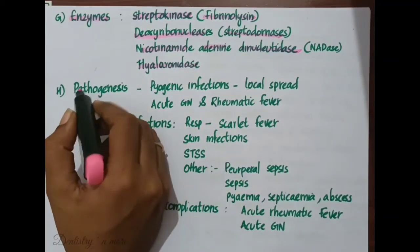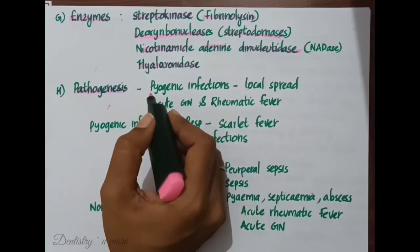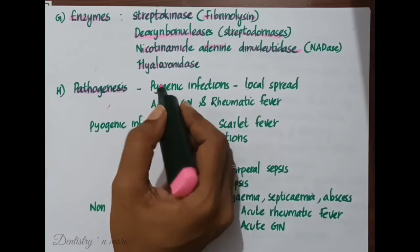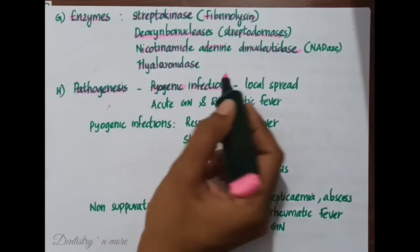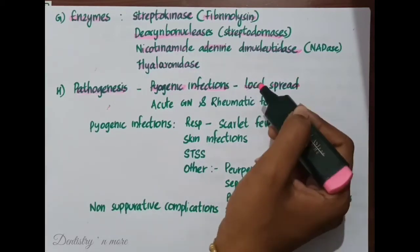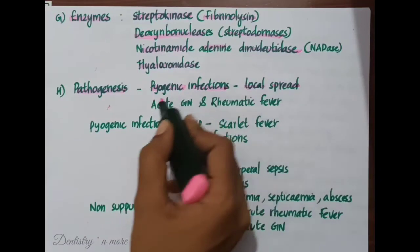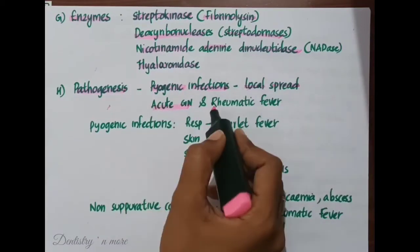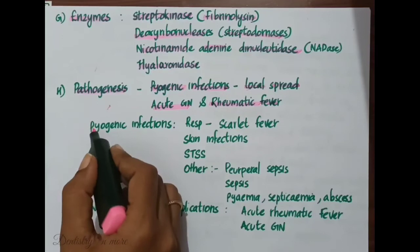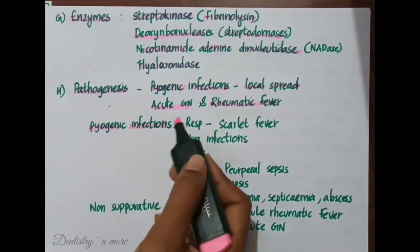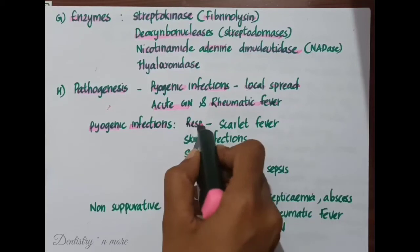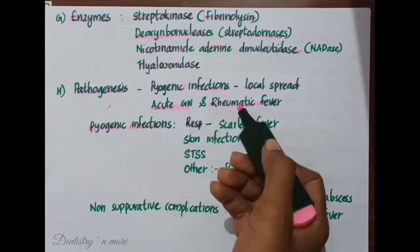Regarding the pathogenesis of Streptococcus pyogenes, they produce pyogenic infections with a tendency to spread locally. Non-suppurative sequelae of local infection include acute glomerulonephritis and rheumatic fever.